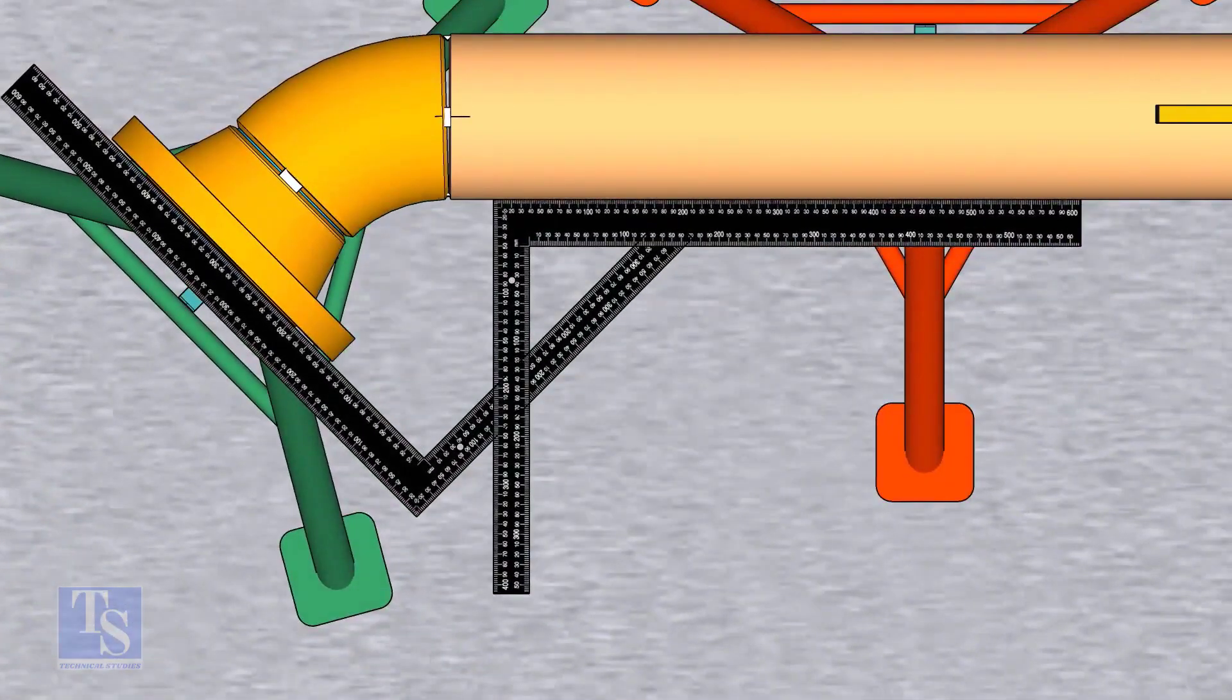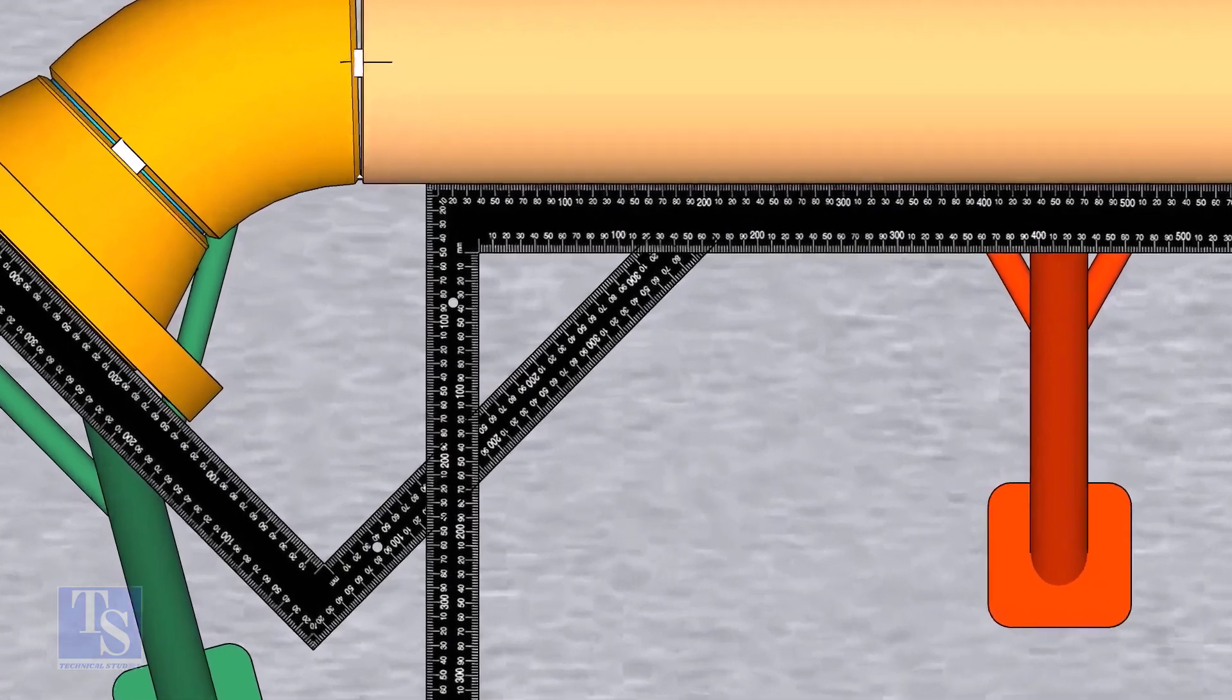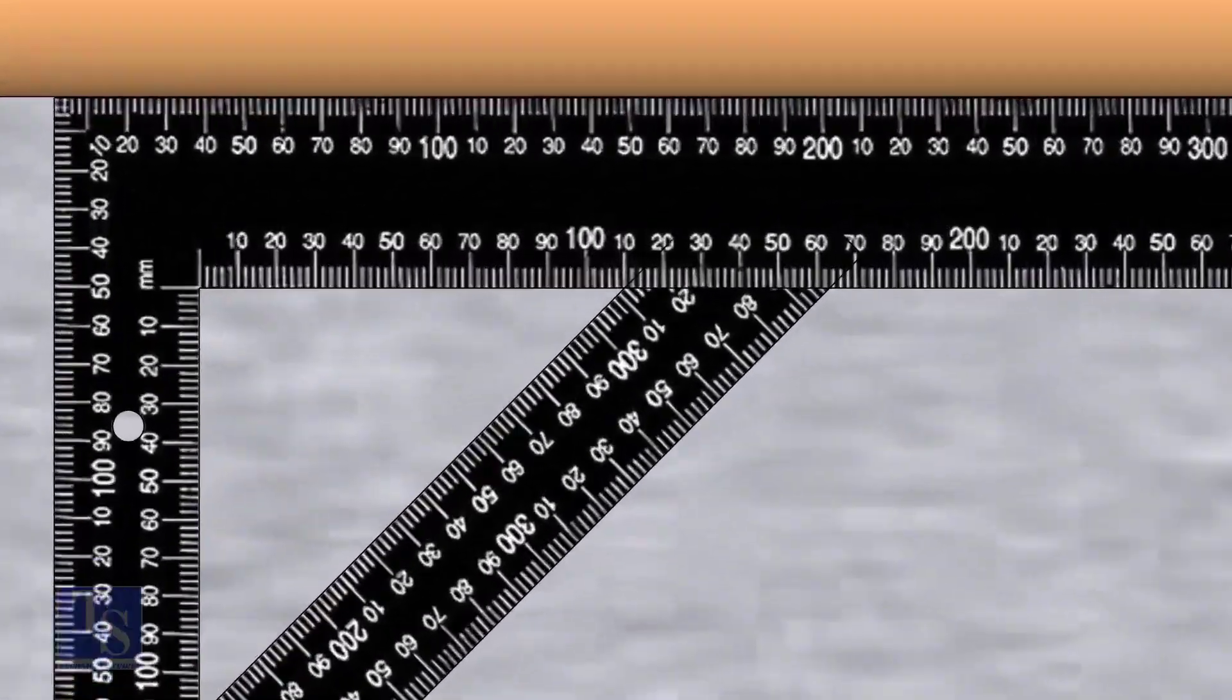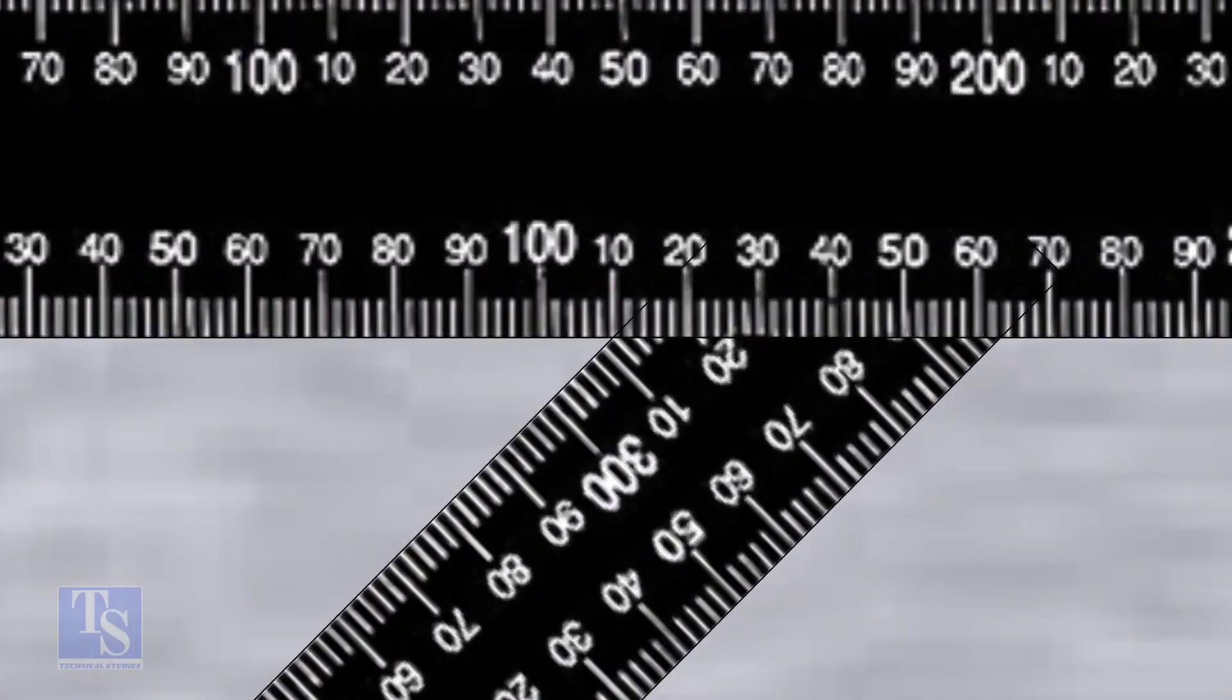Check the degree of the flange face to the pipe. Tack weld on both sides of the joint.